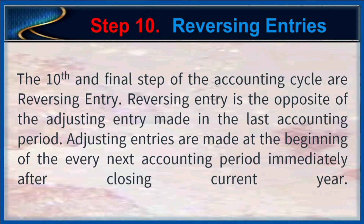Step 10: Reversing Entries. The tenth and final step of the accounting cycle are reversing entries. A reversing entry is the opposite of the adjusting entry made in the last accounting period. Reversing entries are made at the beginning of every next accounting period immediately after closing the current year.